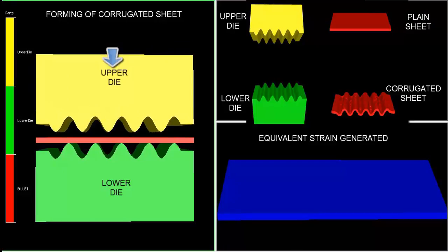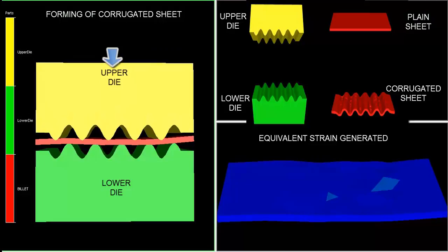Similarly, on the left-hand side, we can see the processing of the corrugated sheet.